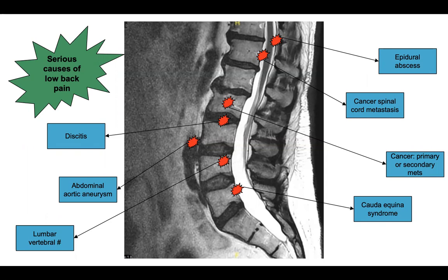There are some other differentials as well, such as facet joint arthritis, prolapsed intervertebral disc, annular tear of intervertebral disc, spondylosis or spondylolisthesis, and spinal stenosis. Some back pain might be a simple mechanical cause. However, the approach to a patient with back pain is to rule out serious causes first.